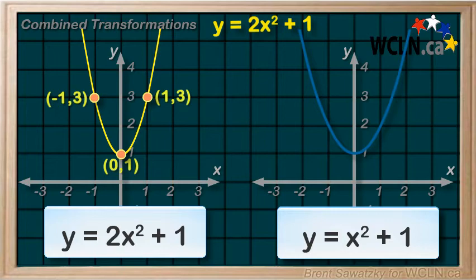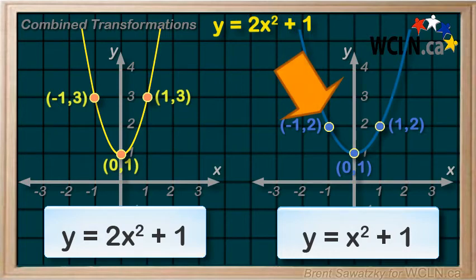So next, our vertical expansion by 2. And that again involves multiplying the y values by 2. So here are our points. And we look at this one, negative 1, 2. And multiplying the y value by 2, leaving the x value alone,